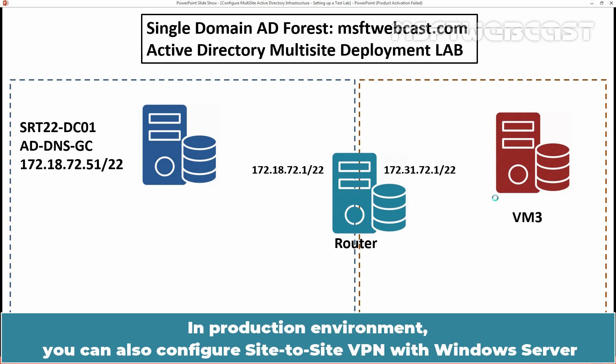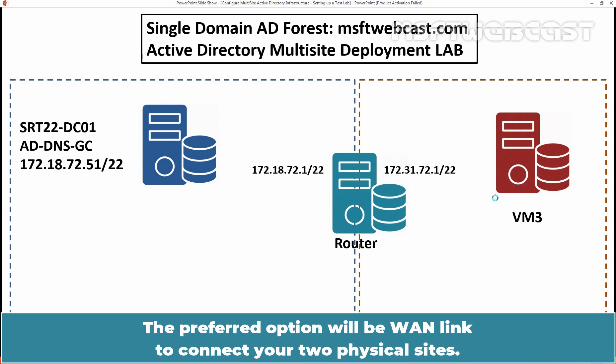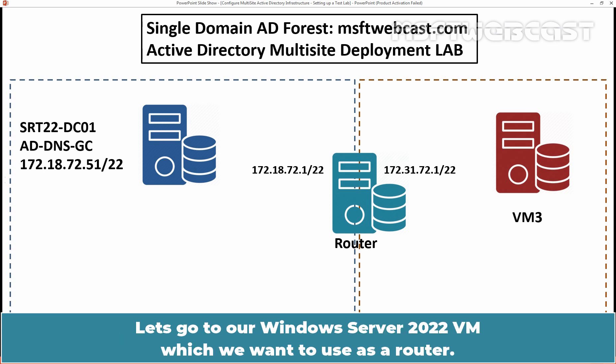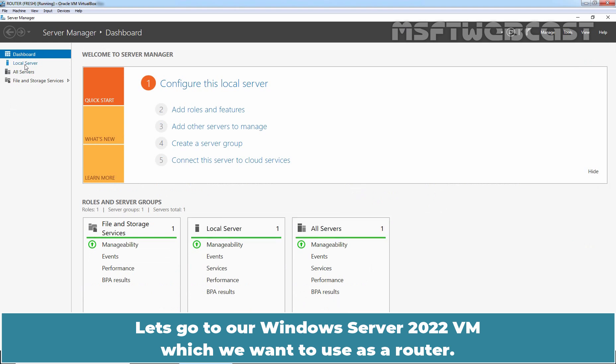In a production environment, you can also configure site-to-site VPN with Windows Server or use professional VPN equipment to connect your remote site securely. The preferred option will be a WAN link to connect your two physical sites. We will enable IP forwarding in Windows Server 2022.